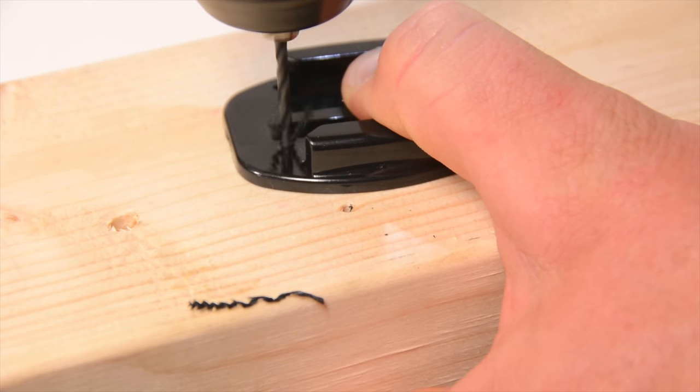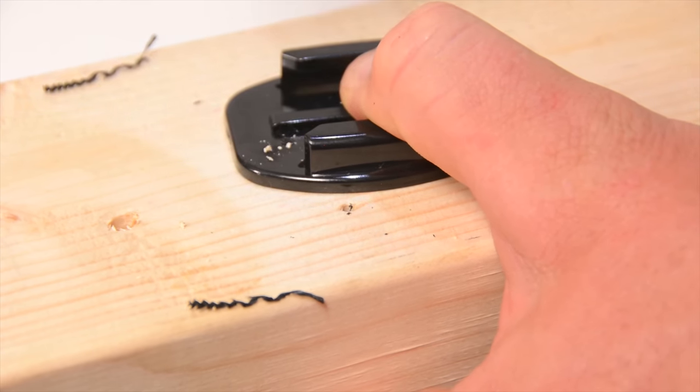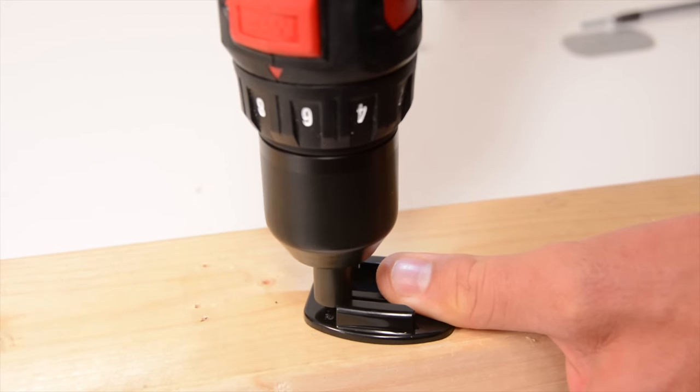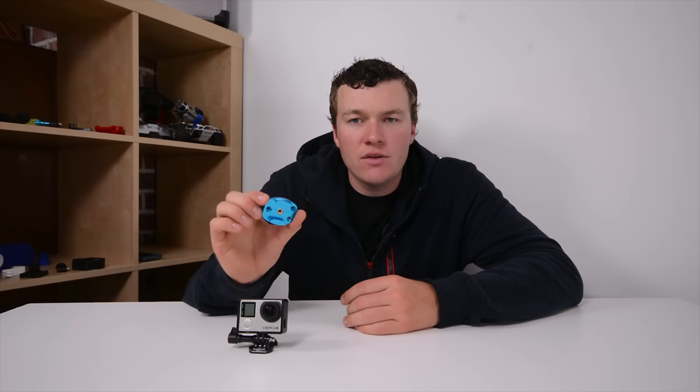If you've seen that DIY video you know that in that video I actually tried to create something similar to this using a drill bit and a countersink bit, but if I'd had this I would have been able to create that mount quicker, easier, and I wouldn't have had to worry about decreasing the structural integrity of that flat adhesive mount by drilling holes in it.